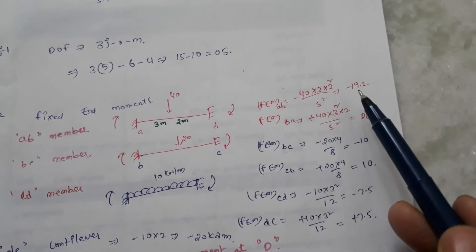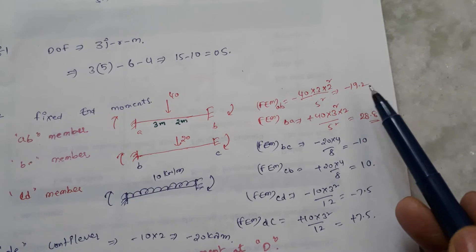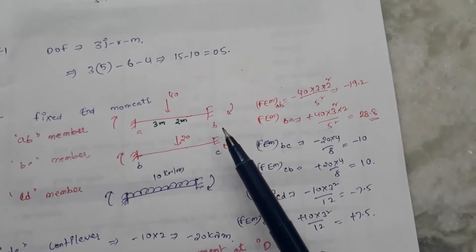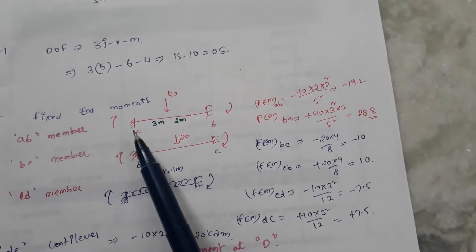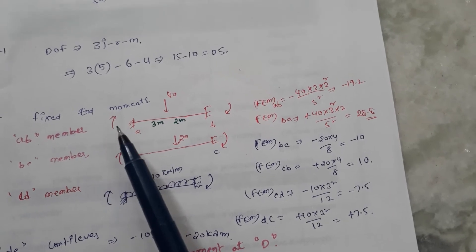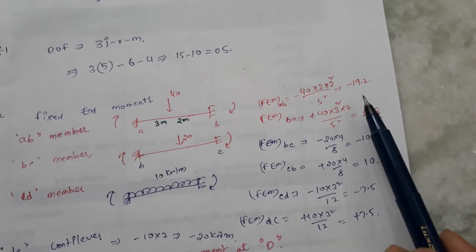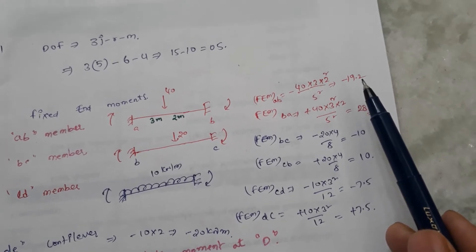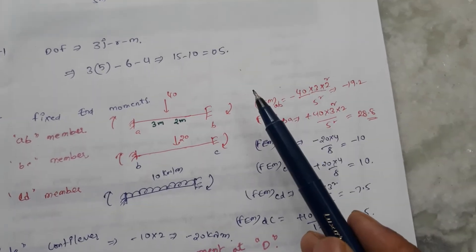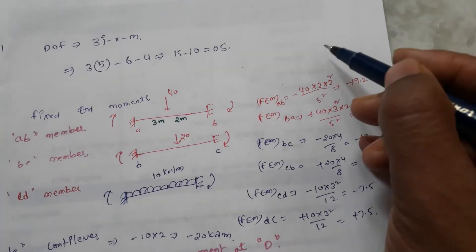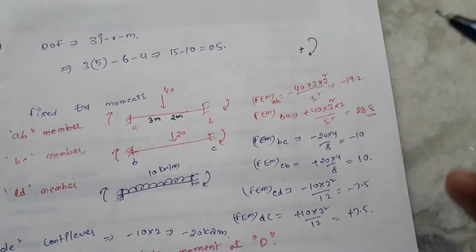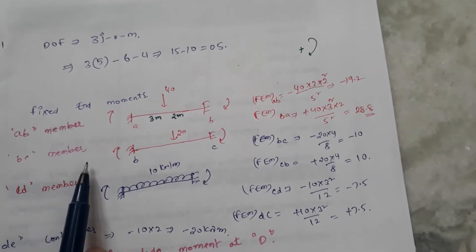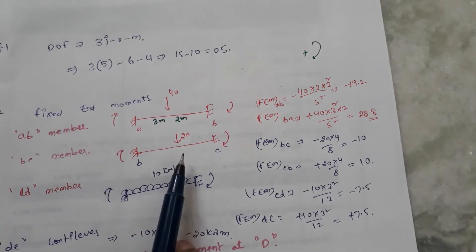This gives minus 19.2. The sign convention is: clockwise is positive, so the left-hand (near) end is clockwise positive and the far end is anti-clockwise, giving a negative direction — so we write minus 19.2. All clockwise moments are positive. Similarly, for member BC with a symmetrical point load, we use the formula P·l divided by 8.